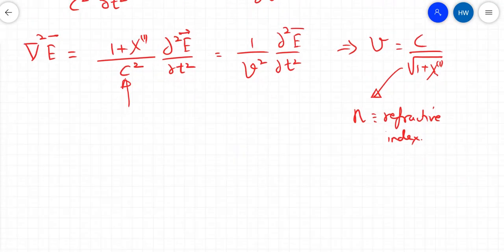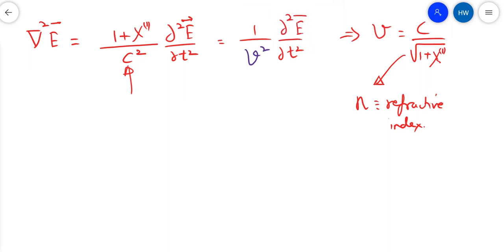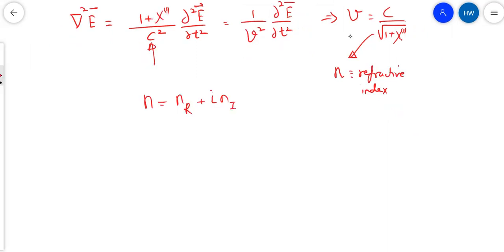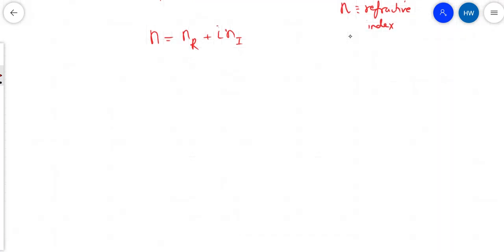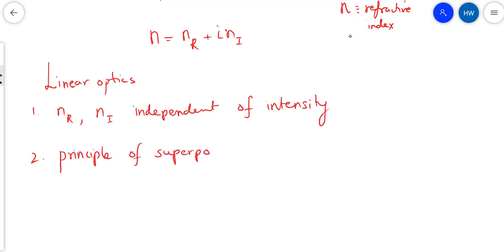Let us just list out the few things that we know about linear response. The refractive index n has got a real and imaginary part. We have discussed a few lectures ago how these two quantities behave as a function of frequency, so that is the dispersive response. In linear optics, the refractive index, that is the n real as well as the n imaginary, both of these are independent of intensity.